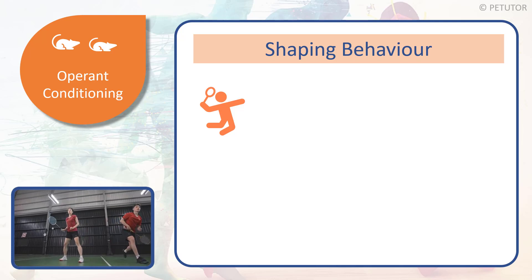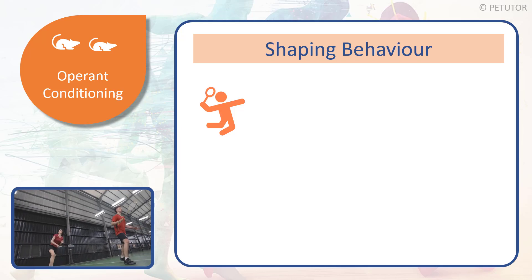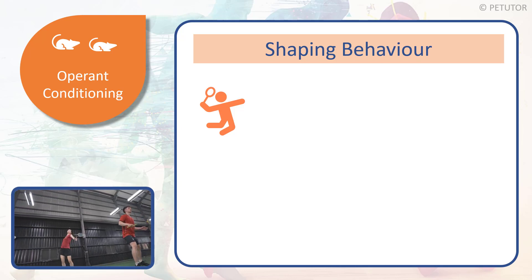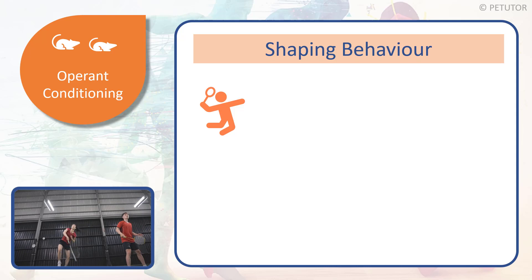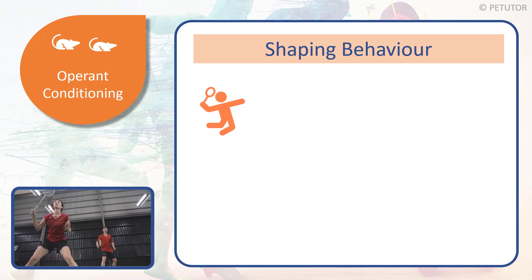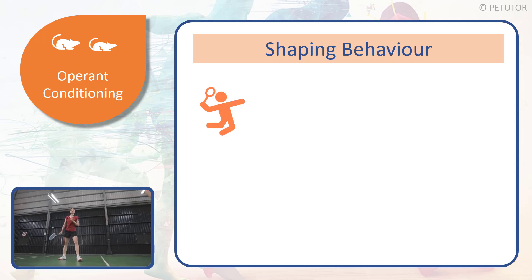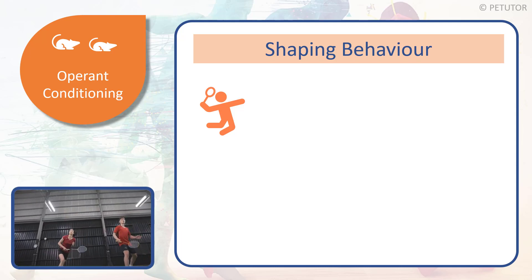In the previous video about operant conditioning, we looked at manipulating the environment. If you haven't watched that video, I recommend you quickly go and have a look at it before we tackle shaping behaviour. The reality is that manipulating the environment and shaping behaviour are coupled together. Manipulating the environment is setting up practice drills in order to promote the desired response.